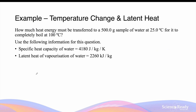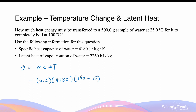We should calculate the energy required for each process separately. The energy required to raise the temperature of water is given by Q equals m times c times delta T. The mass of water is 0.5 kilograms, the specific heat capacity is 4180 joules per kilogram per kelvin, and the temperature change is 100 minus 25 degrees Celsius. It is suitable to use degrees Celsius here as the change in temperature is the same in both Celsius and kelvin. This gives a heat energy of 156,750 joules.